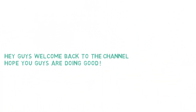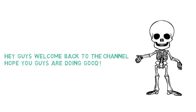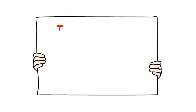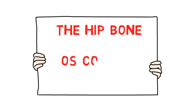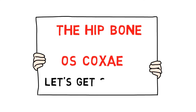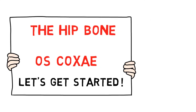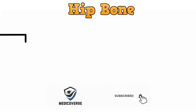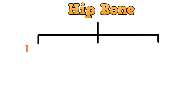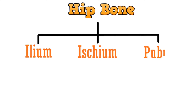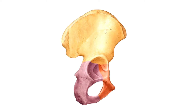Welcome back to the channel. In this video we will discuss the anatomy of the hip bone, also known as os coxae in Latin. Hip bone is a large irregular bone which is mainly composed of three elements: ilium, ischium, and pubis. These are connected by their bodies at the acetabulum. We will discuss each of these separately and see what anatomical features are present there.